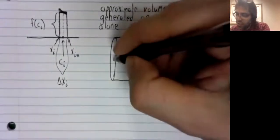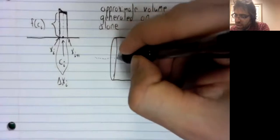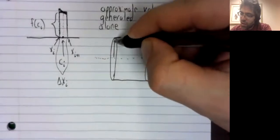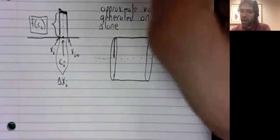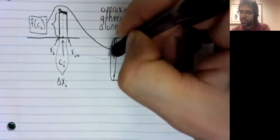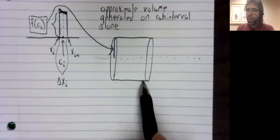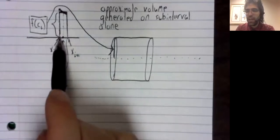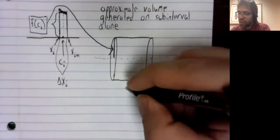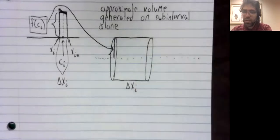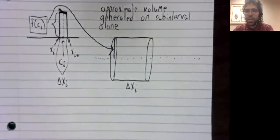It's the area of this circle squared times pi times the height of the cylinder. And in this case, let's draw in the x-axis. The radius is f of c sub i. And the height, or the width maybe I should say, is this distance. This is very much not drawn to scale. Delta x sub i.